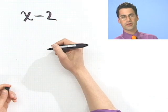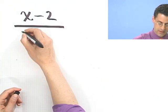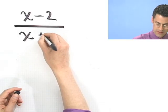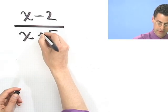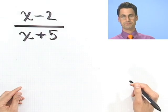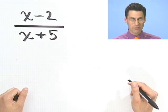x minus 2, there's a good old polynomial, divided by x plus 5. Another favorite to many of you out there in web land, over the information superhighway. Now, so this is actually called a rational expression.